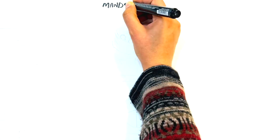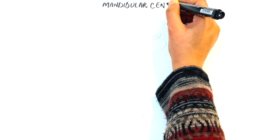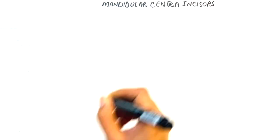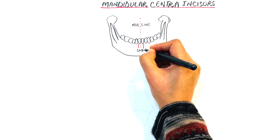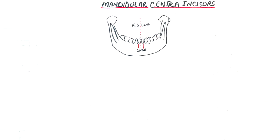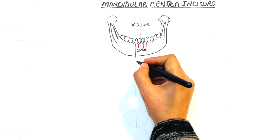The mandibular central incisors are the first teeth centralized in both sides of the midline, with the mesial of each one in contact with the mesial surface of the other and the distal surface of each one is in contact with the lateral incisors.